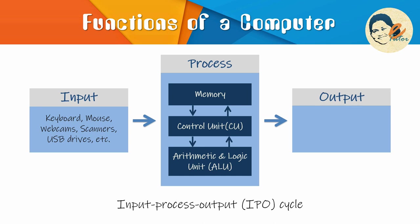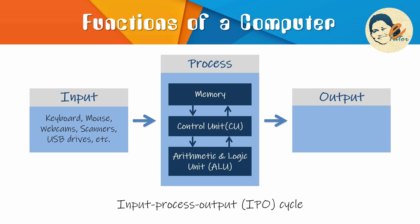The central processing unit, or CPU, is the main processing component of a computer. CPU has two components: the arithmetic logic unit, or ALU, and the control unit, or CU. ALU is the fundamental building block of the CPU and performs basic arithmetic and logic operations. The control unit supplies the data required by the ALU from memory or input devices and directs the ALU to perform a specific operation based on the instruction fetched.